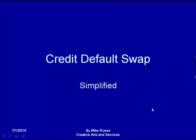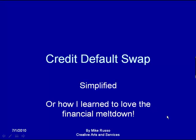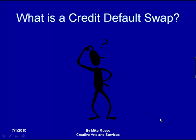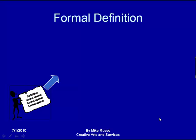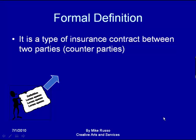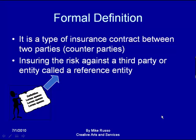Credit Default Swap Simplified, or How I Learned to Love the Financial Meltdown, by Mike Russo of Creative Arts and Services. So what is a Credit Default Swap? Here is a formal definition: it's a type of insurance contract between two parties called counterparties, and it insures the risk against a third party or an entity called a reference entity.